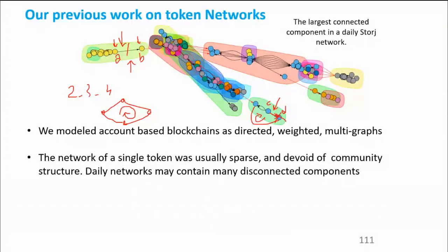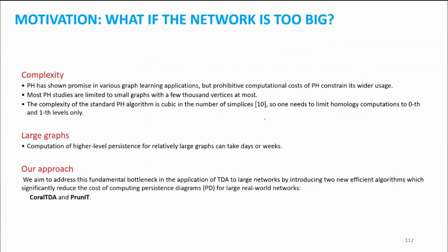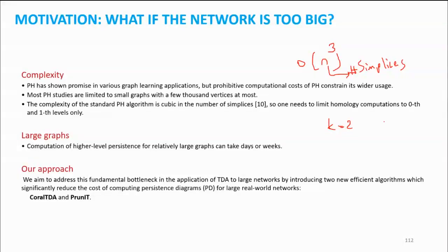The idea came from this work. What is the complexity of persistent homology? It is prohibitively computationally costly, so most studies are limited to small graphs with a few thousand vertices at most. The complexity is the number of simplices cubed — zero-simplices, one-simplices, two-simplices. Looking for K=2 dimensional holes is costlier than K=1. For this reason, most of the time we look at zero, one, and two-dimensional holes, because going to three or four is too costly and those holes typically don't exist anyway.